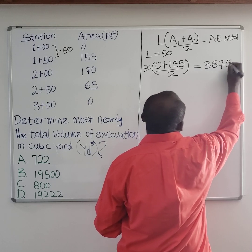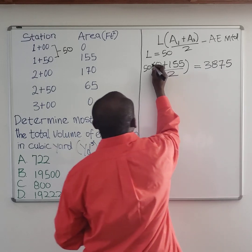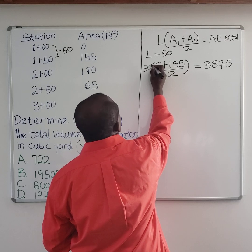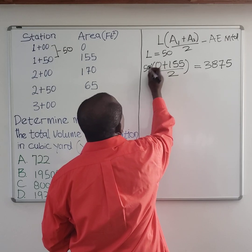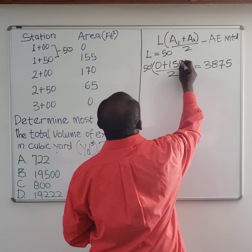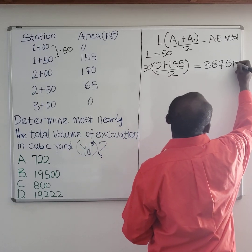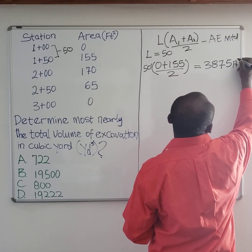Once we get this value — L is in feet and the area is in feet squared — so what you have here for the volume is feet cubed.